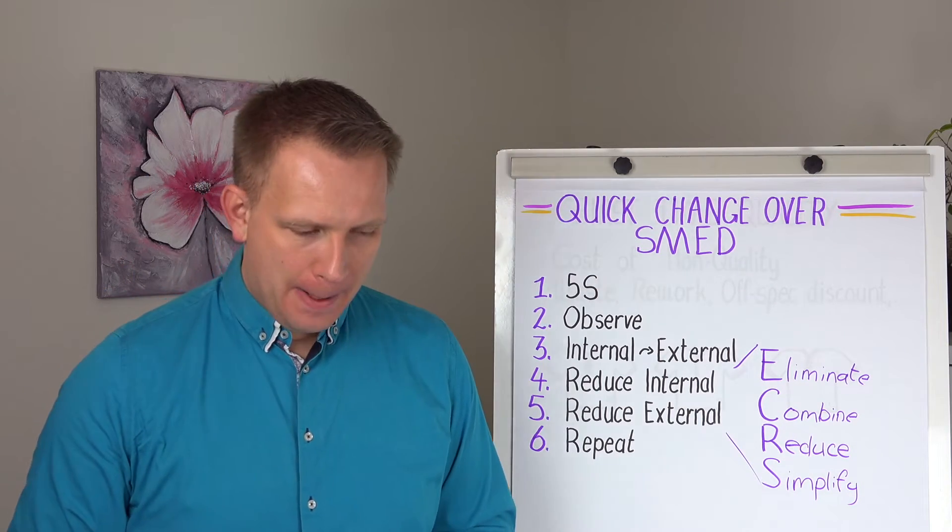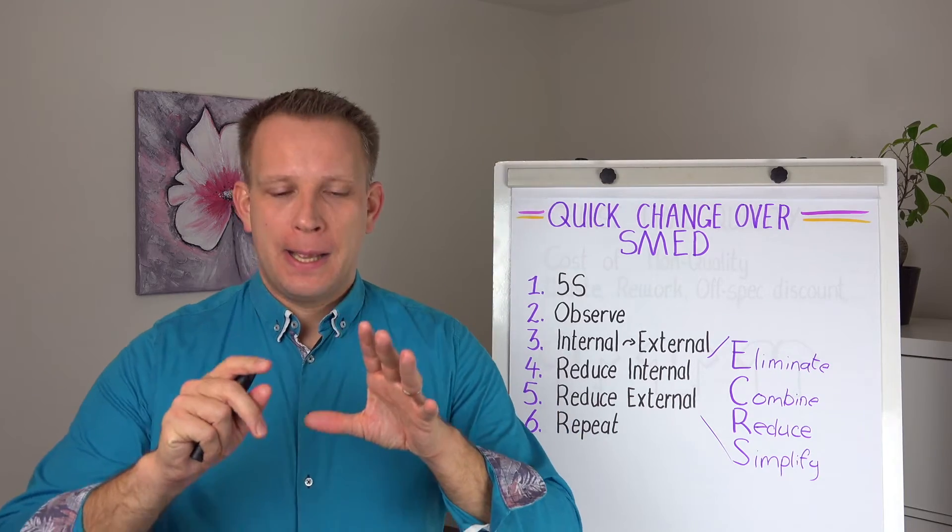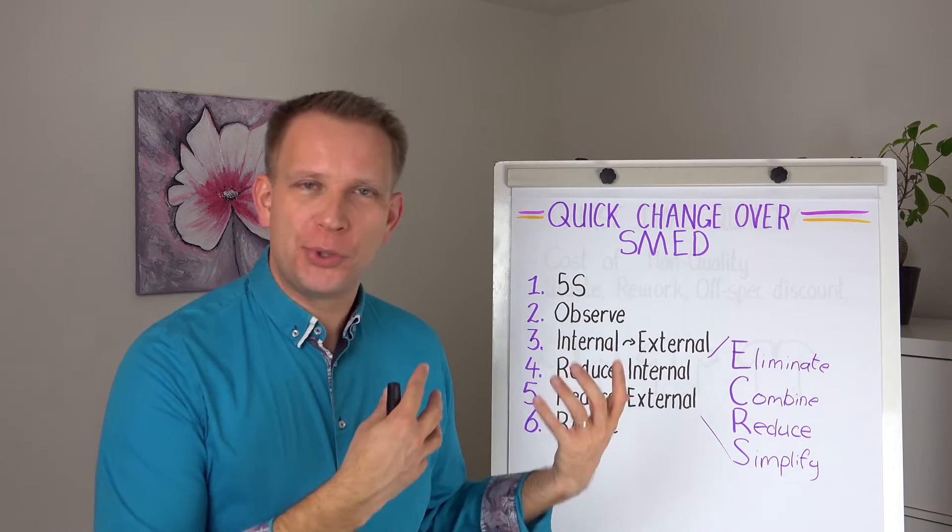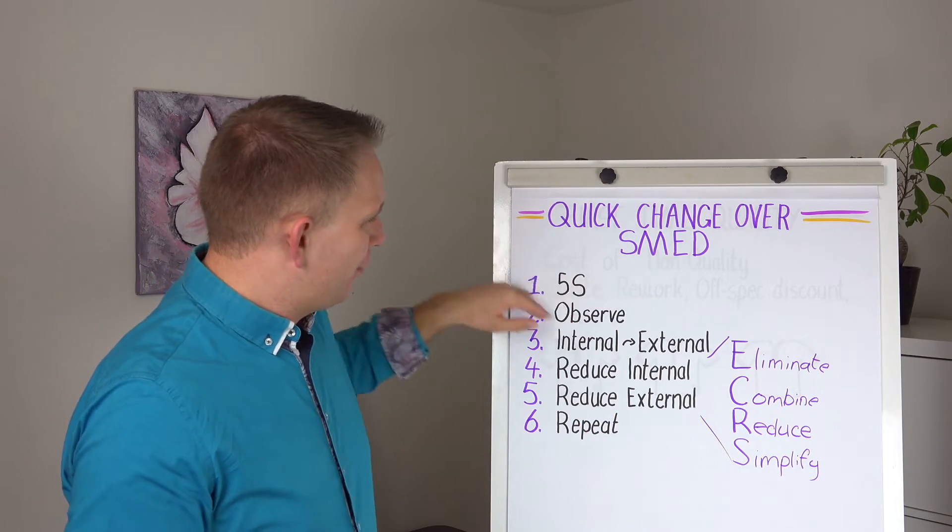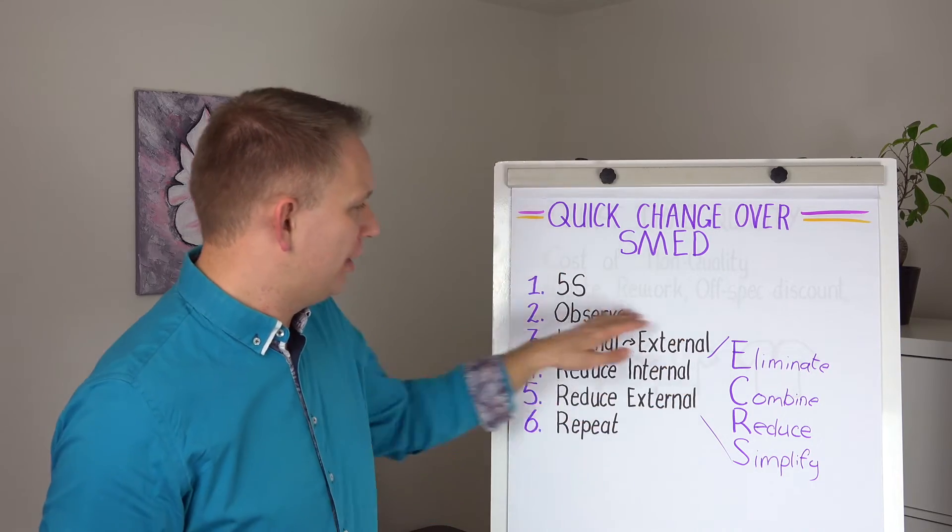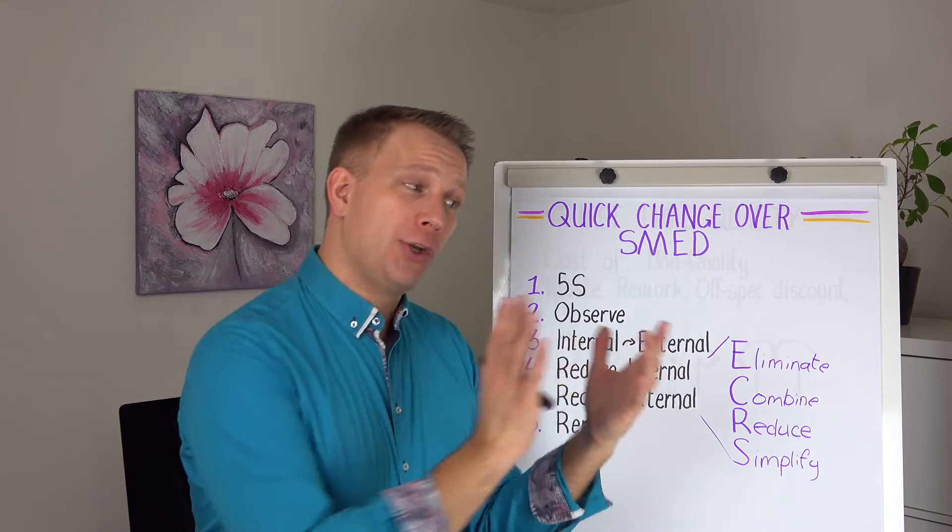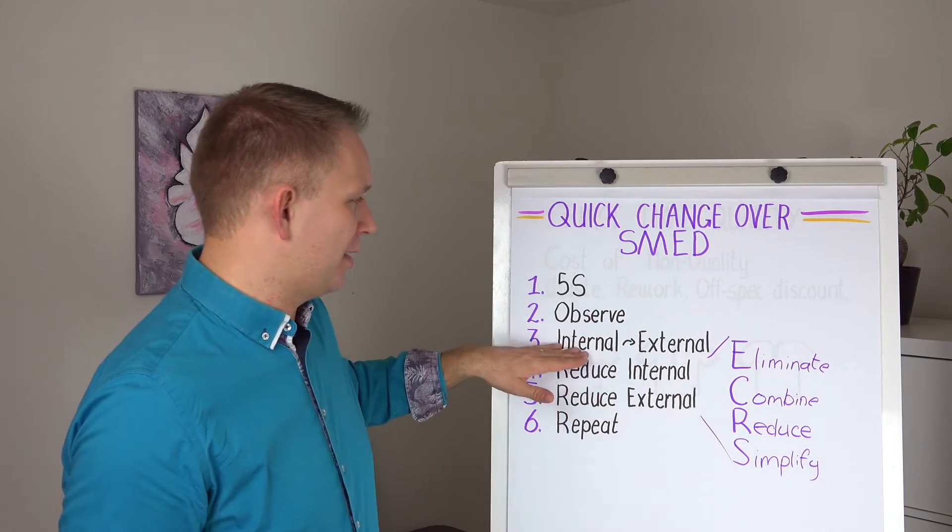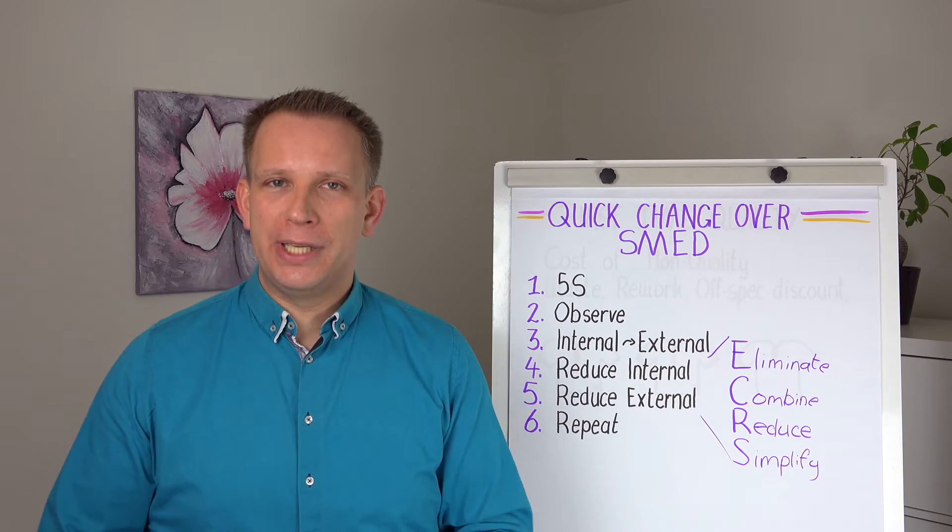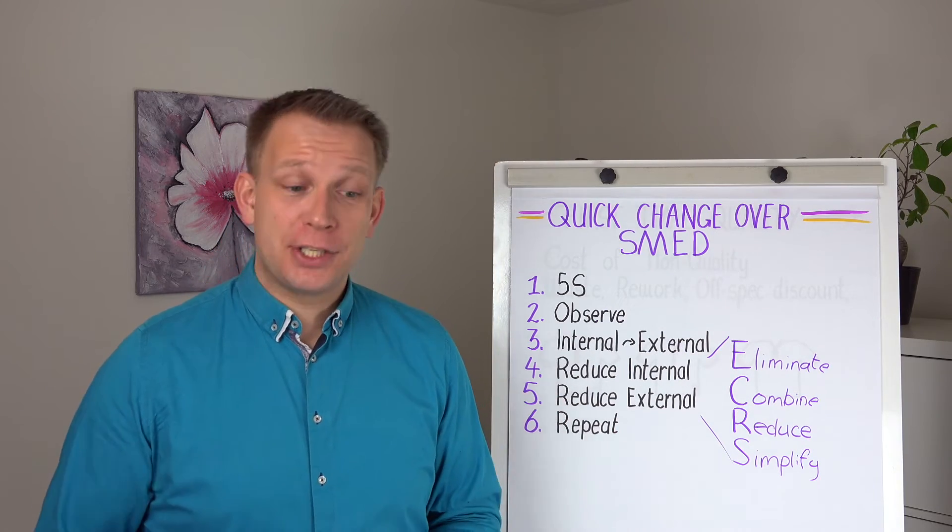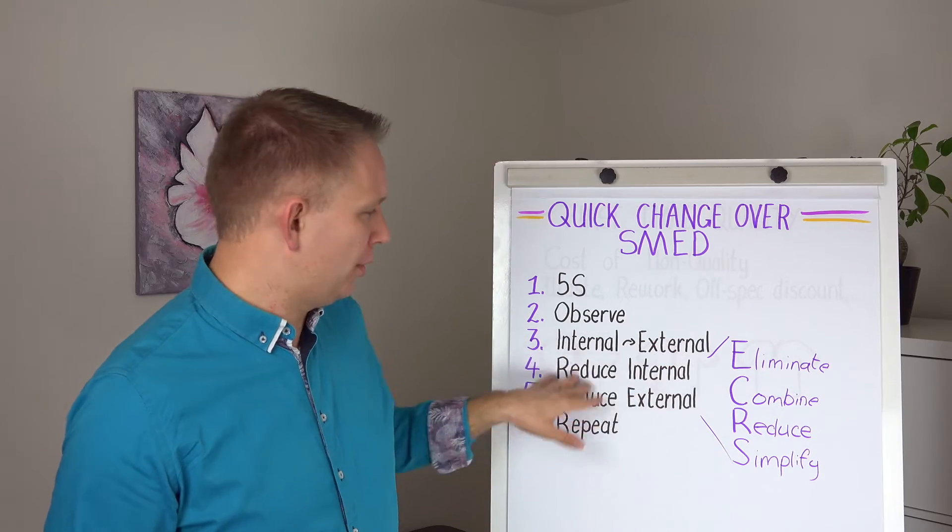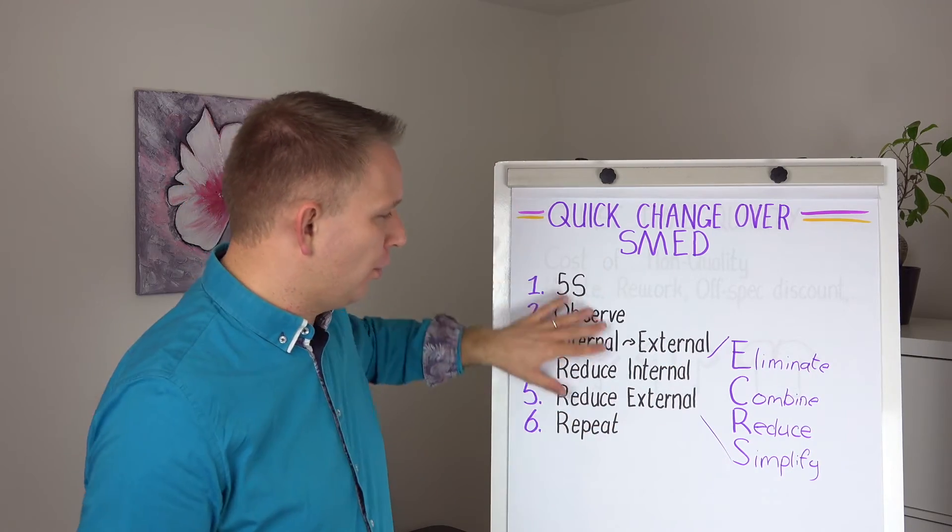What that means and maybe before we go into that, one thing, especially because of the repeat step. When you are starting this sort of journey of reducing your changeover time, first focus on the 5S part. Then go into it again with open eyes, focus on getting most of those internal tasks to outside of the actual changeover to become external tasks. Then go over it again, improve that part, check that part, and then go for a full ECRS. So also build this up in stages, especially if it is new to the people in your factory. First go into 5S, then go in with 5S and internal, external. We've tried to reduce it, then go in with all three of them.